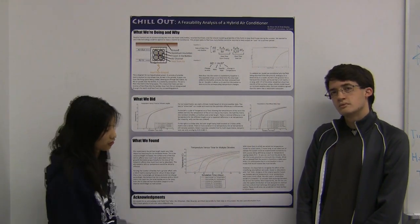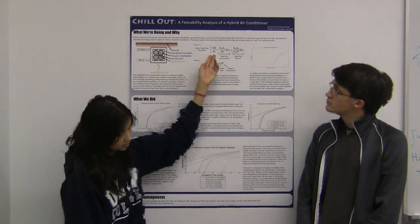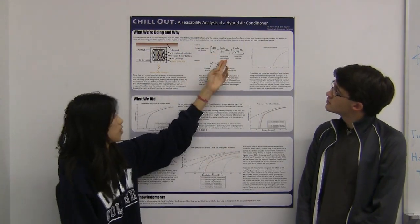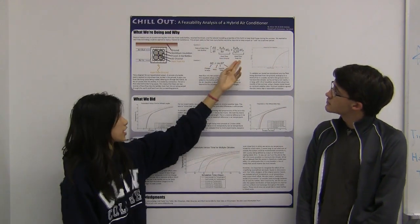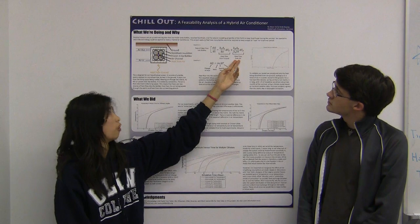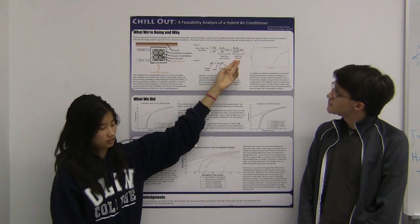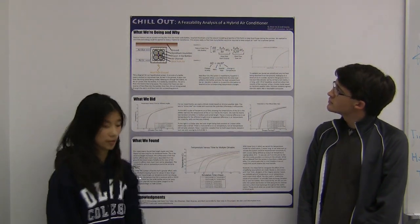From this, we developed a differential equation modeling the heat flow. The first term represents heat flow from the ground through the styrofoam and into the bottles. The second term represents heat flow from the air into the bottles as the air passes through the matrix.